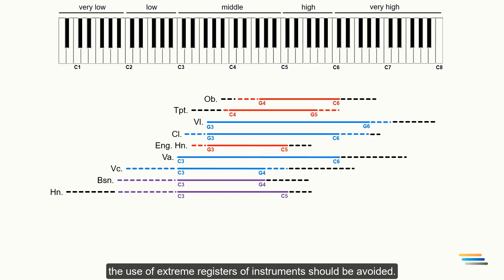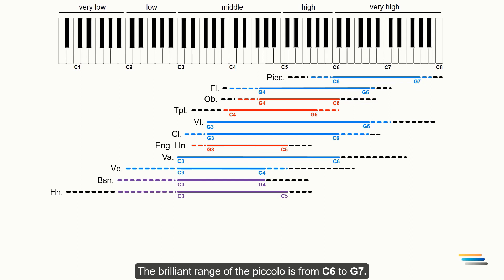The best flute register for unison and octave doubling is G4 to G6. The extreme notes should be given to the piccolo which is easier to play than the flute. The brilliant range of the piccolo is from C6 to G7. The blue lines are rarely used.